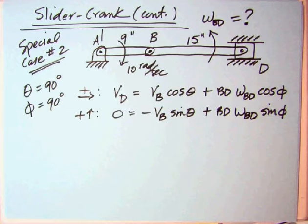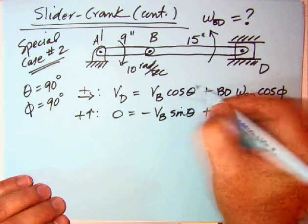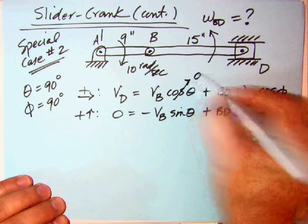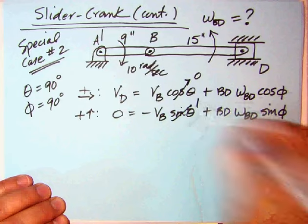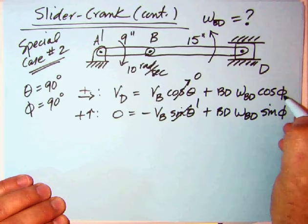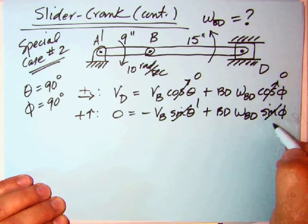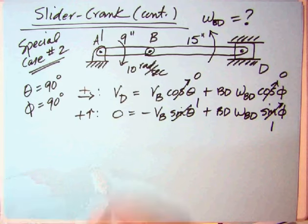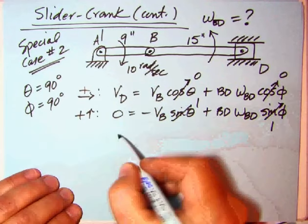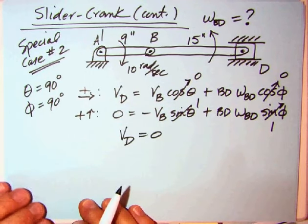The cosine of 90 degrees equals zero, the sine of 90 degrees equals one. Cosine of phi is 90 degrees, which is zero. And sine of 90 degrees equals one. So what are we left with? VD comes out to be zero, and then omega BD can be found from the second equation.